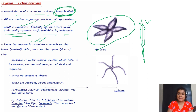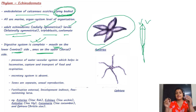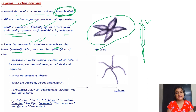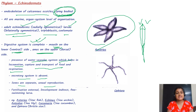The digestive system is complete, with the mouth on the lower or ventral side and the anus on the upper or dorsal side. The water vascular system is present, which helps in locomotion, capture and transport of food, and respiration. The excretory system is absent. Sexes are separate, fertilization is external, and development is indirect with free-swimming larvae.